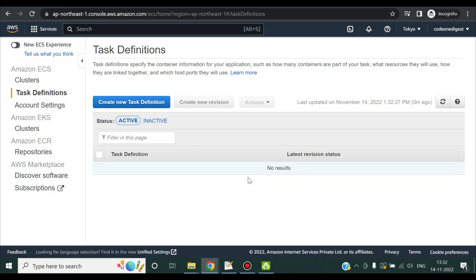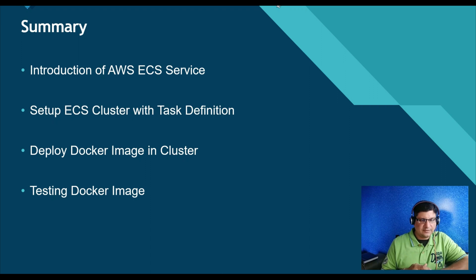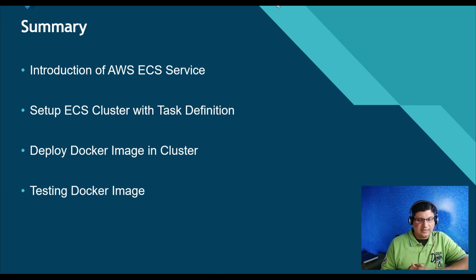In this video we have seen what AWS ECS service is, what an ECS cluster is, how to configure an ECS cluster, how to create a task definition, how to create a container inside it, how to run the task definition, what Fargate is, and finally how to deploy our Docker image into the cluster and test the application in a browser. We also did the cleanup of our cluster and task definition.